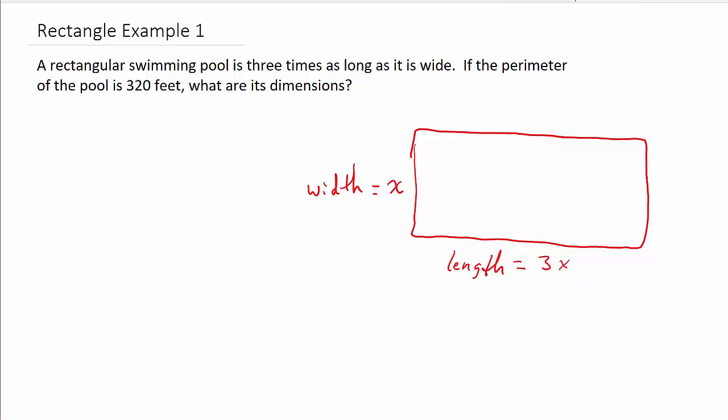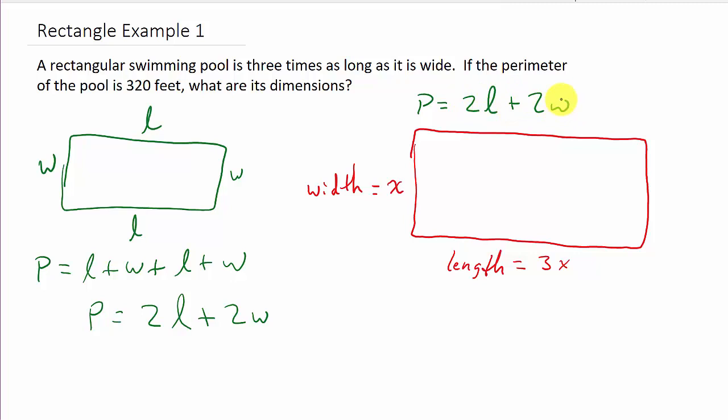All right. Now, hopefully you remember the formula for the perimeter of a rectangle. Remember, the perimeter is twice the length plus twice the width. In other words, if that's the width, that's the length, there's the length, and there's the width. An easy way to get it, you just add up all the sides. So, we've got what? L plus W plus L plus W. L plus L is 2L. W plus W is 2W. Okay, so that's where that comes from. So, we know that the formula for the perimeter is twice the length plus twice the width.